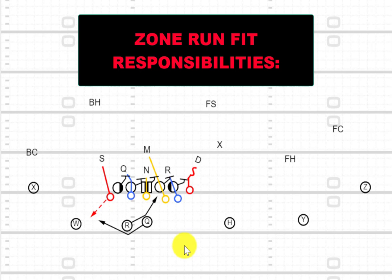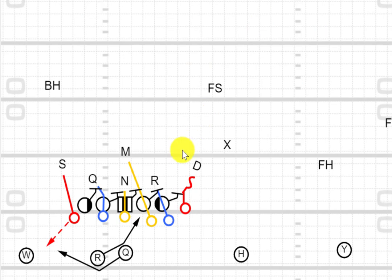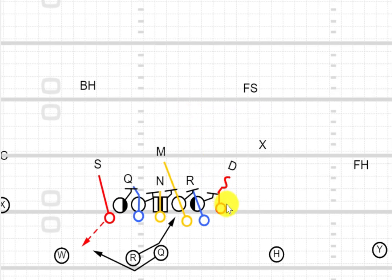Most teams are going to look at that box and say, 'We're going to try and run the football to get them out of this look.' For the zone run fit on a Canadian field, our two outside linebackers — the dollar and the star — are your edge players. Whether they're blitzing or not, they set the edge on any block they get. When we get a zone block from the tackle working out to the dollar, the dollar sets the edge on that zone and owns the C gap. The rush and quick are the B gap players, so the rush is going to work to penetrate that B gap, forcing the ball back up inside.